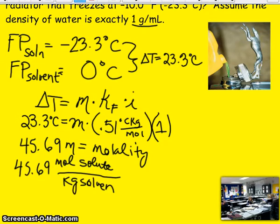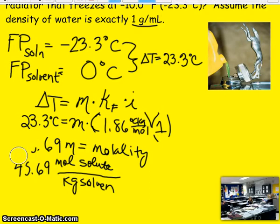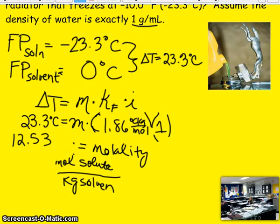And that molality, remember, is moles of solute per kilogram solvent. And you know what? This is not 0.51. 0.51 is the boiling point elevation constant. The freezing point depression constant is 1.86. Sorry about that. Did you know that? Yeah? And you got 12.53 molal. Okay.